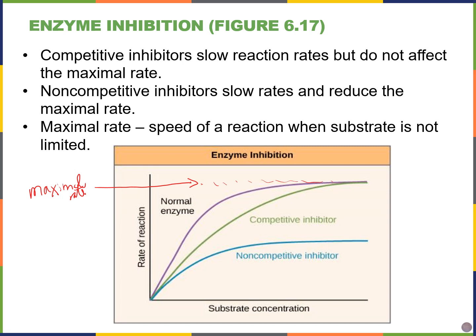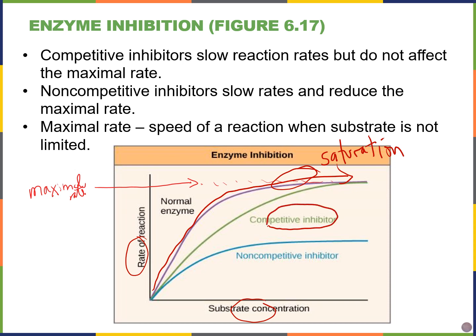How do inhibitors change reaction rates? On the y-axis is the rate of the reaction, and on the x-axis is the substrate concentration. Without inhibitors, the normal catalyzed reaction rate increases and gets saturated over time — when all the enzymes are used up, there is a maximum reaction rate, which we call saturation. With a competitive inhibitor, we can also eventually reach that saturation point and the highest reaction rate, but it takes more time. The competitive inhibitor is binding to some of those active sites, but we can overcome this by increasing the substrate concentration.